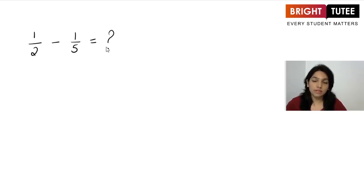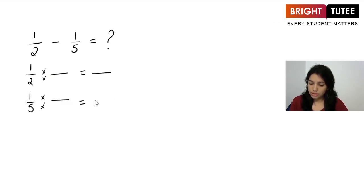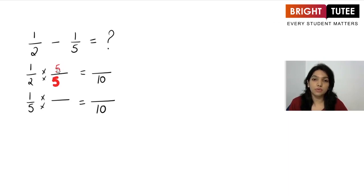To solve addition or subtraction of unlike fractions, we work with equivalent fractions. Let's find equivalents for 1 over 2 and 1 over 5 by multiplying numerators and denominators to get the LCM of 5 and 2, which is 10. Multiplying 2 by 5 gives 10, and similarly with the numerator, giving 5 over 10. Multiplying 5 by 2 gives 10, giving 2 over 10.